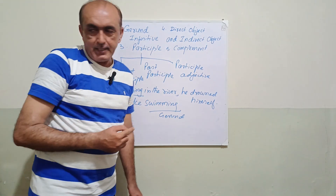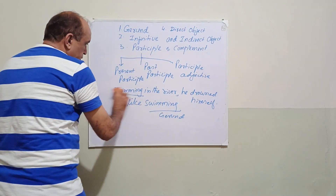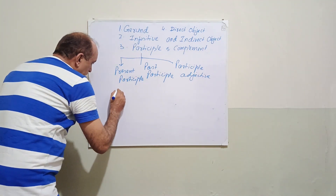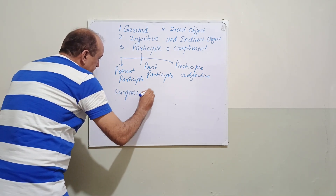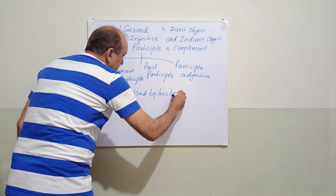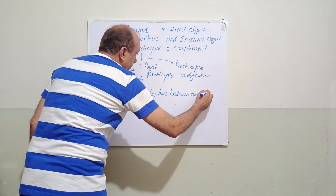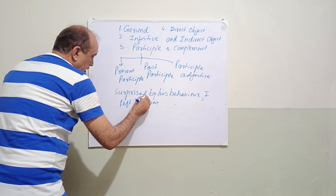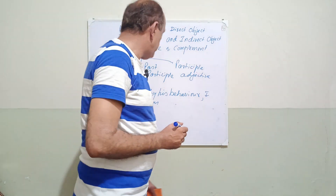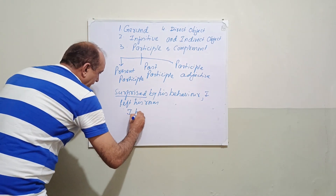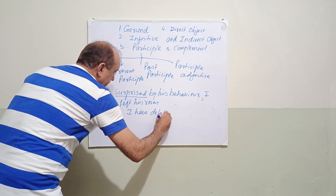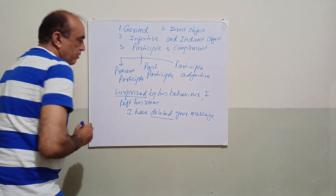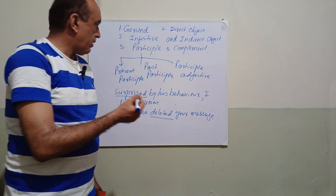Now we come to past participle, the second kind of participle. Example: surprised by his behavior, I left his room — here 'surprised' is past participle. Another example: I have deleted your message — here 'deleted' is past participle. Past participle is the third form of the verb.